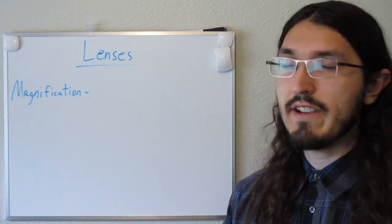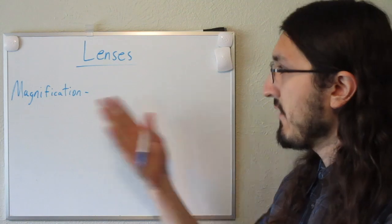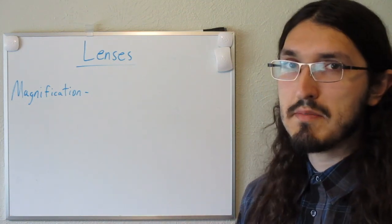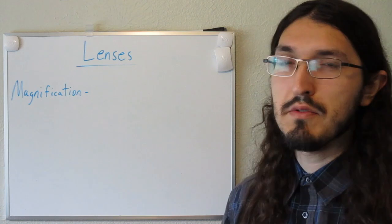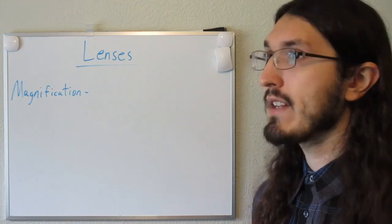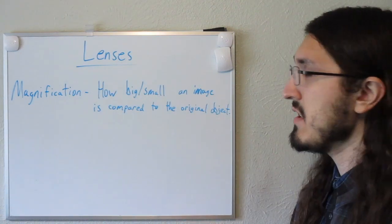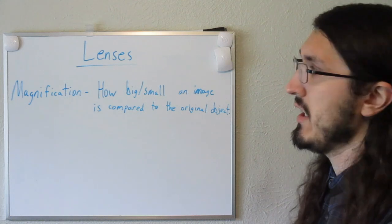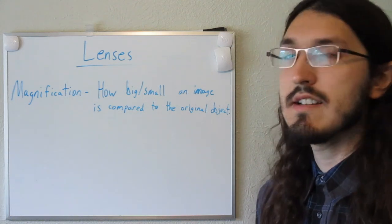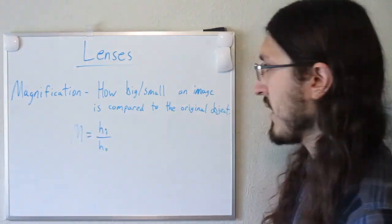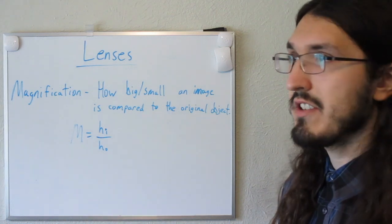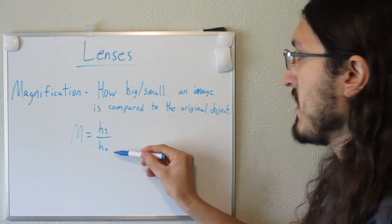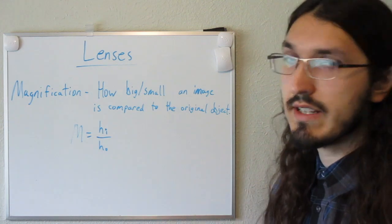The first term I want to talk about is magnification. Magnification is a word we use to describe how big or small an image is compared to the original object. The equation we use to calculate magnification for a particular lens is: M equals the height of the image divided by the height of the object.